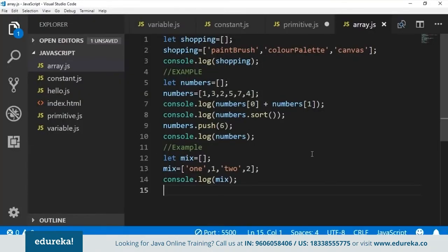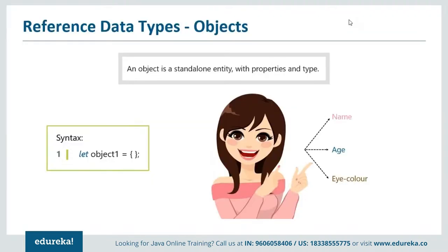Now let's look at objects. An object in JavaScript is a lot like an object in real life. For example, let's consider a girl — she has a name, an age, and eye color. Her name is Emily, her age is 15, and she has brown eyes. I declared an object which was a girl and listed down her properties: name, age, and eye color. So 'girl' is the object name, and name, age, and eye color are properties. Objects are variables too, but they contain many values or many properties, and each property will have some value.